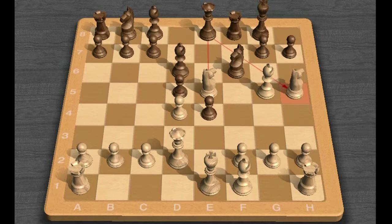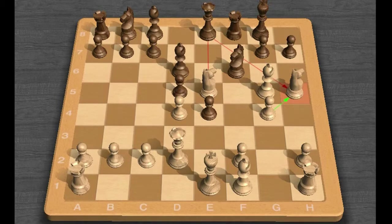Queen E8, G4. Bird had obviously overlooked Morphy's last move, and apparently panics.